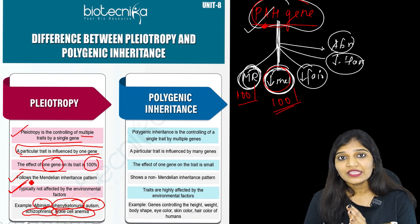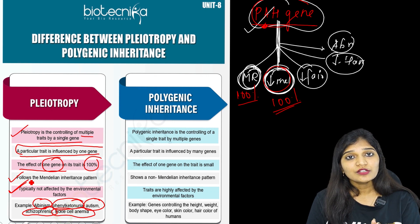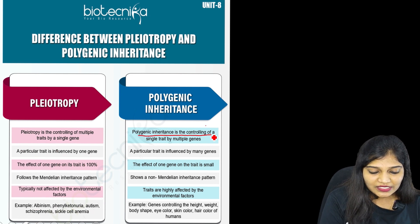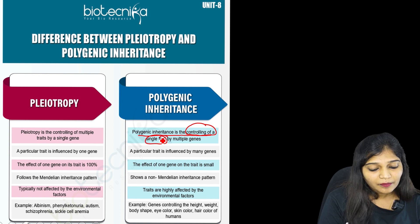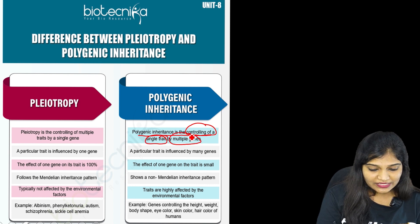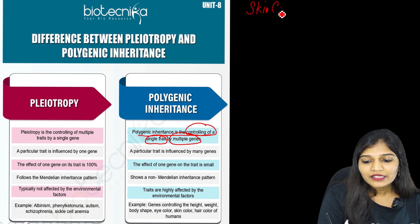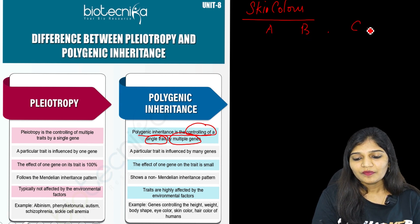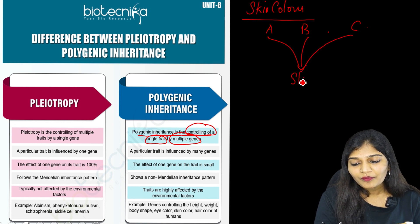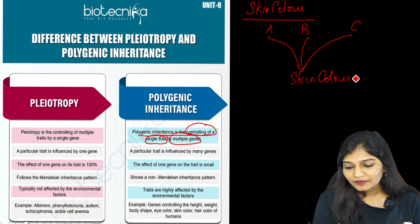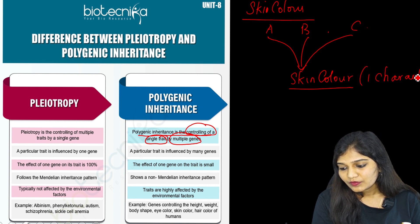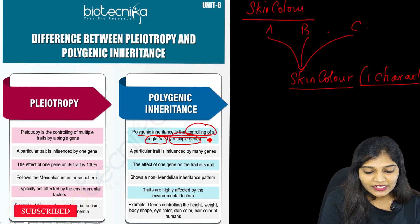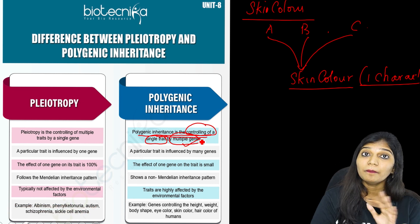Now let's look at polygenic inheritance: many genes controlling one character or trait. Polygenic inheritance is the controlling of a single trait by many genes. Taking skin color as an example — there are three genes: A gene, B gene, and C gene. These three genes together produce skin color, which is one character. So many genes control only one character.